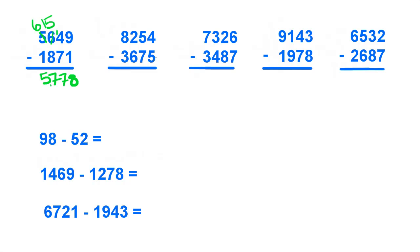We start over here: 4 minus 5, we have to borrow from the 5, make that a 4, put the 1 right there, making that a 14, minus 5 is 9. And 4 minus 7, cannot do it, borrow from the 2, make that a 1, make that a 14. 14 minus 7 is 7.